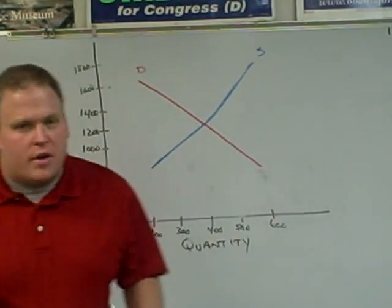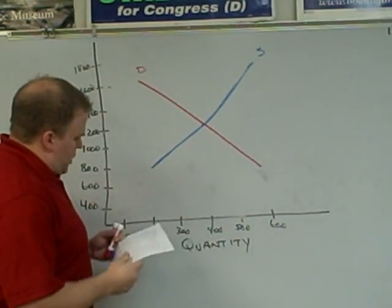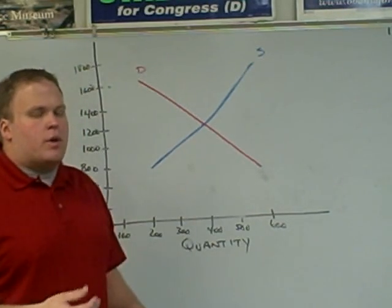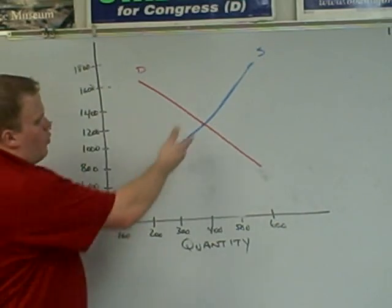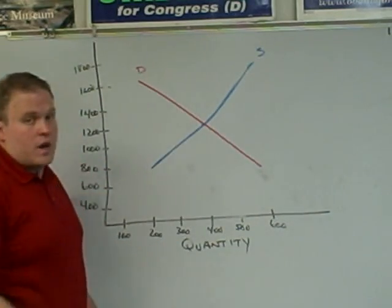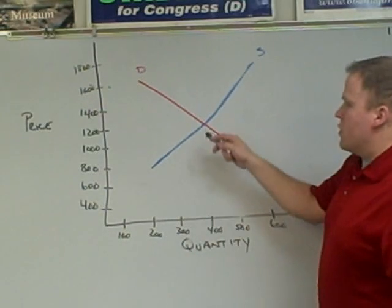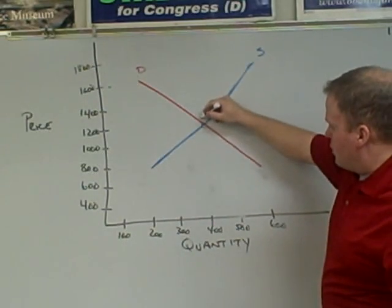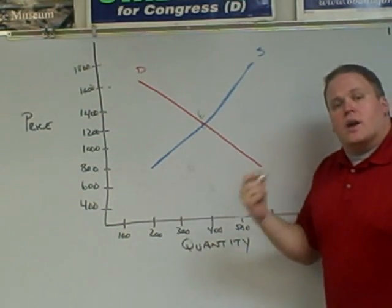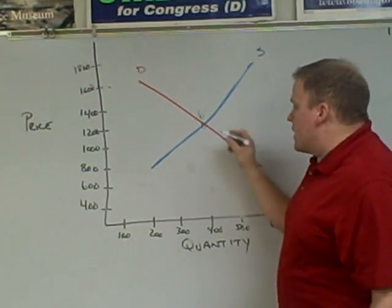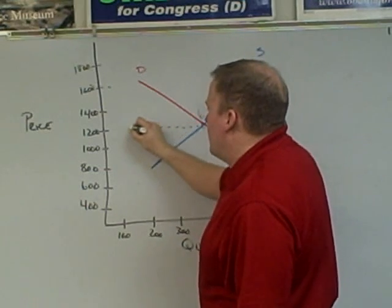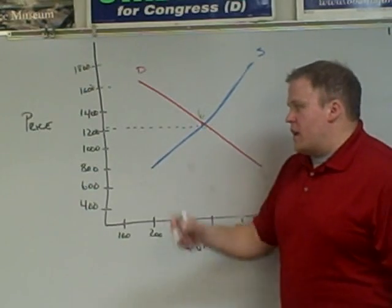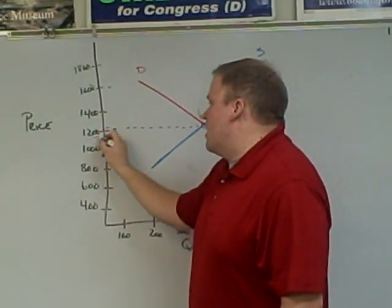We went ahead and graphed the supply curve. The second question asks: what is the equilibrium price? To find the equilibrium price, you need to look at exactly where those lines intersect. You'll see that those lines intersect right here — that is your equilibrium. You can label that E if you want. To find the equilibrium price, you take that intersection and draw a line to the left to follow the price, and you'll find that the equilibrium price is $1,200.